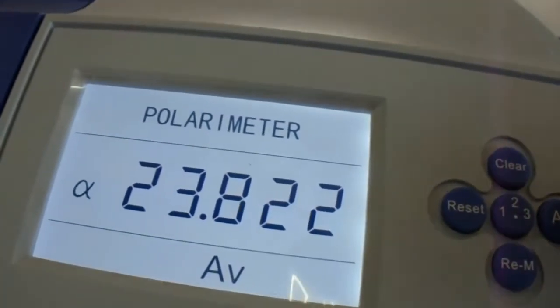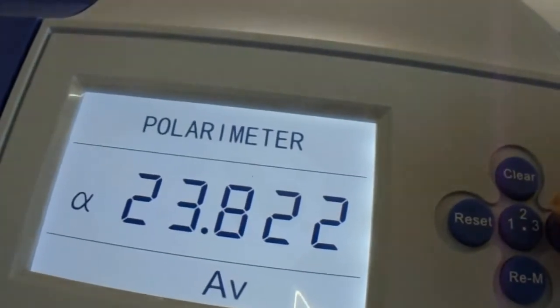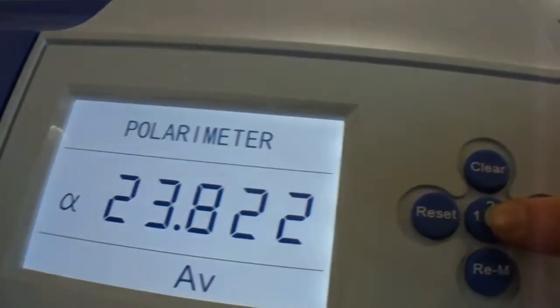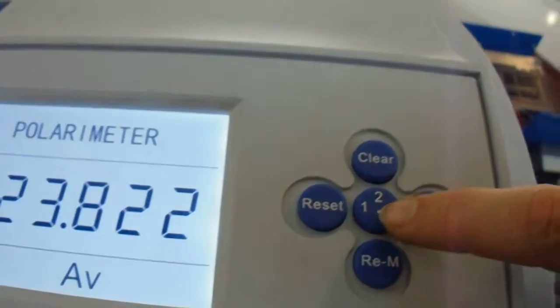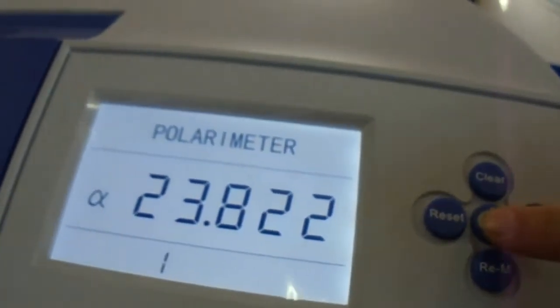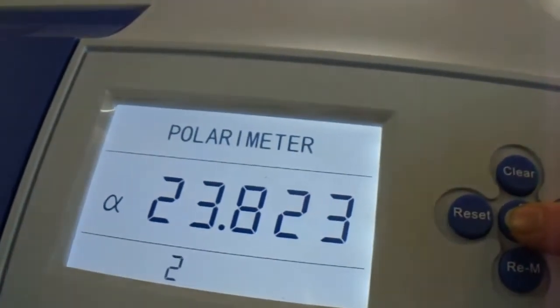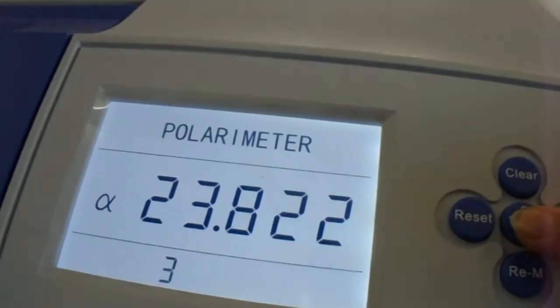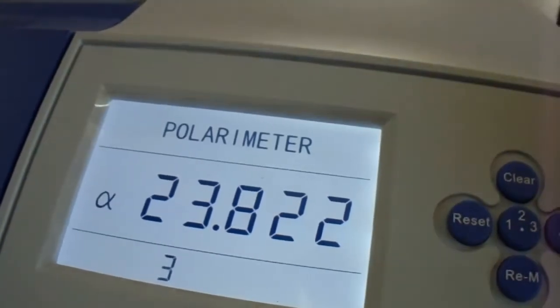If you want to see the values of your samples, you just need to click the one, two, three buttons to see the first measurement, second one, and third one.